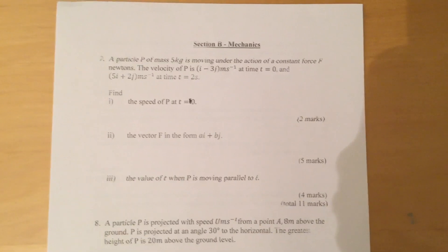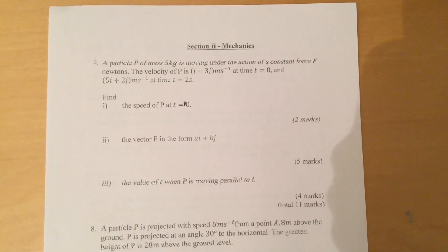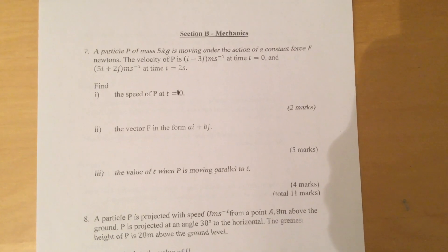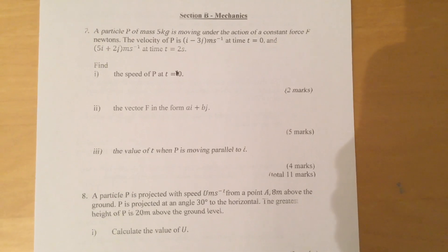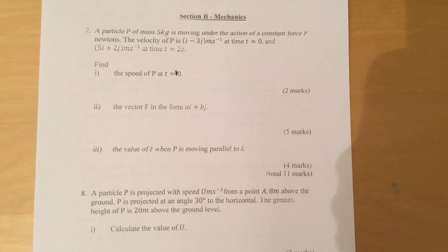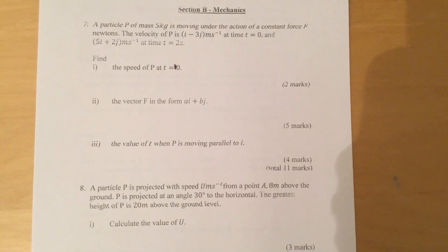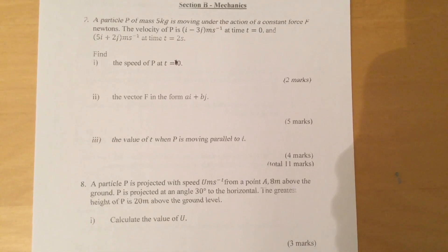Find part 1, the speed of P at t equals 0; part 2, the vector F in the form ai plus bj; part 3, the value of t when P is moving parallel to i.